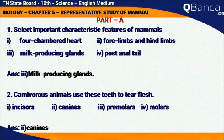Select the important characteristic feature of mammals: milk-producing glands. Carnivorous animals use this type of teeth to tear the flesh.